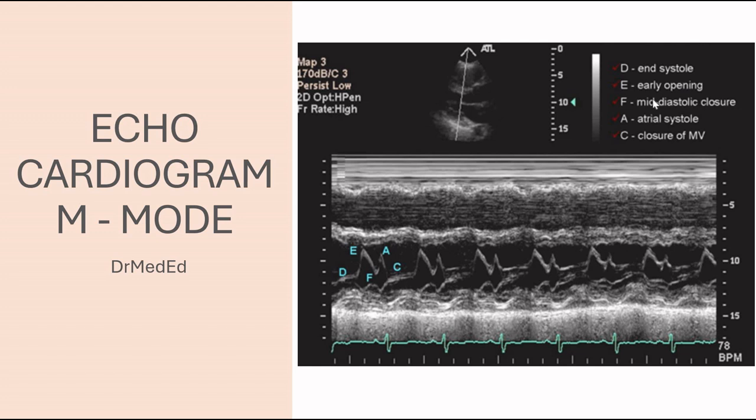D is for end systole, E is for early opening, F is for mid-diastolic closure, and A is for atrial systole when the leaflet is open again, and C stands for closure of the mitral valve. So this is the M-mode through the mitral valve.